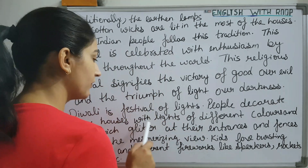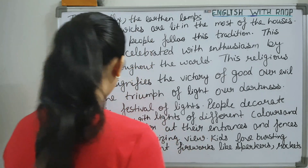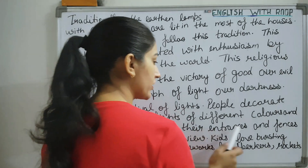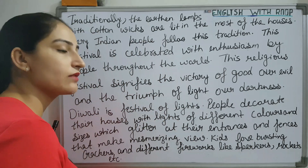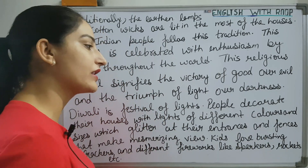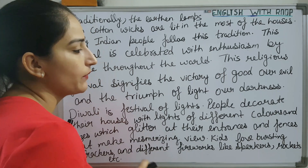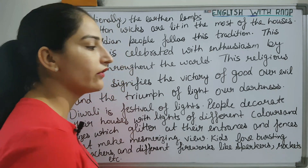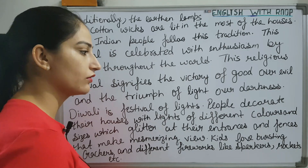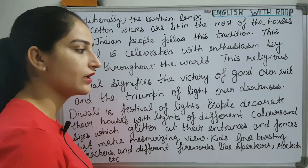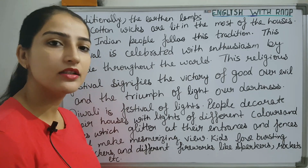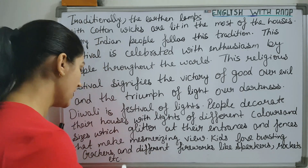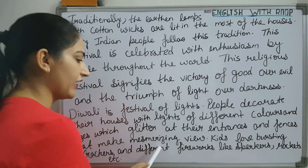Diwali is a festival of lights. People decorate their houses with lights of different colors and sizes, which glitter at their entrances and fences. There are some things outside the house — around the entrance and doors — that make a mesmerizing view.